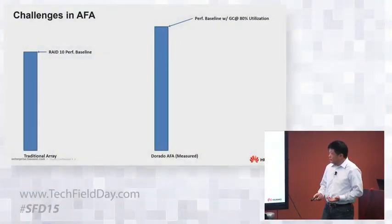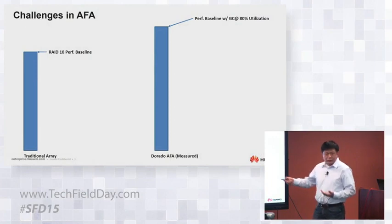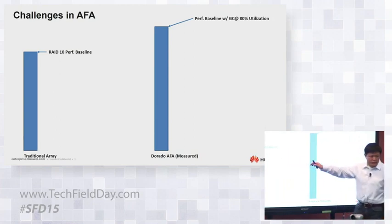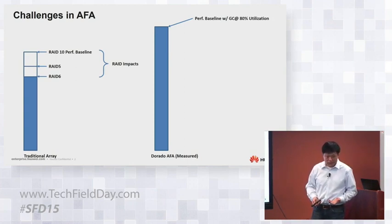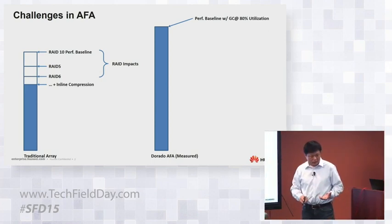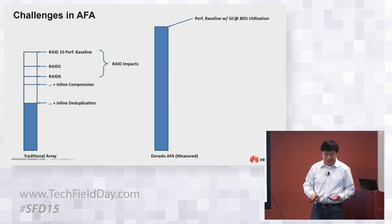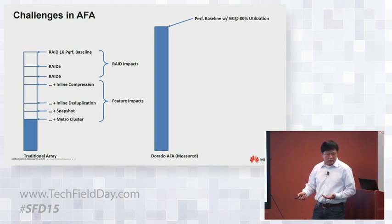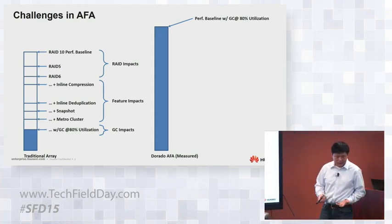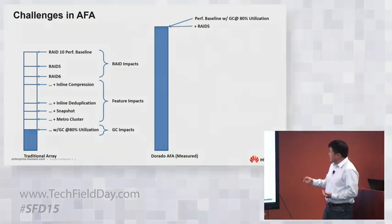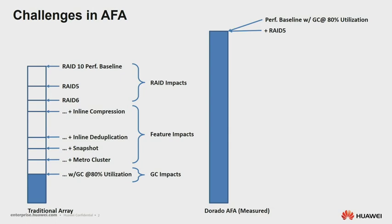When we look at the introduction of our flash array, we find many challenges. For example, when looking at a traditional array, suppose this is our base performance baseline. When we add more and more features, we keep getting decreased in performance. After adding inline compression, we get a percentage off. Then with inline deduplication, it's even more. And with snapshot and metro cluster. What makes everything worse is the famous SSD GC kicking in.